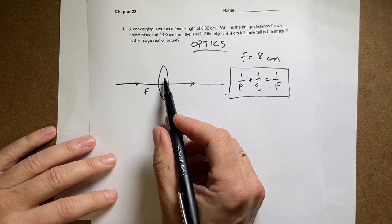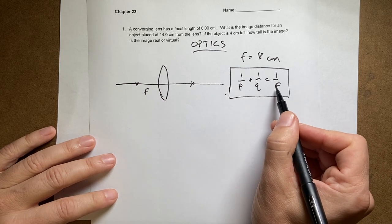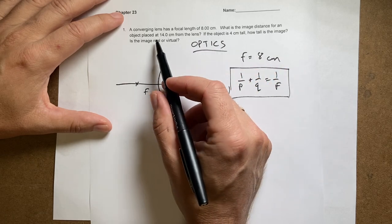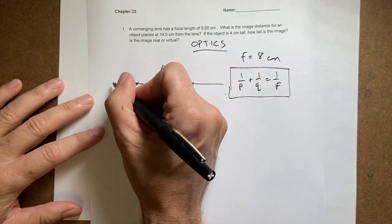Now if I have a converging lens, then I have a positive focal length. Let's find the image distance. What is the image distance for an object placed at 14 centimeters? So here's my object.